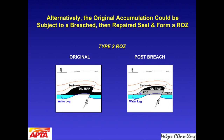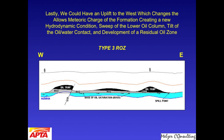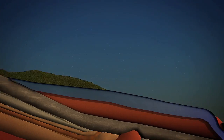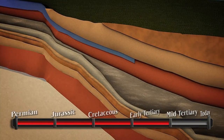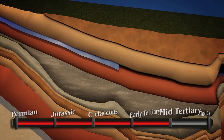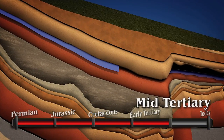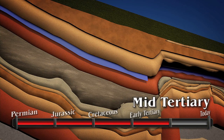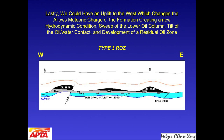The second stage, as mentioned, is a breach seal. A third type of ROZ involves a hydrodynamic gradient — we won't discuss that in detail today, but it represents an outcrop of the reservoir formation to the west, where water moves down dip through the basin, tilts the oil-water contact, and moves oil out to the east. We'll leave that discussion for a later date.